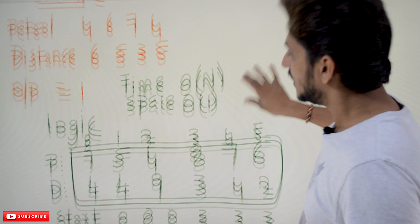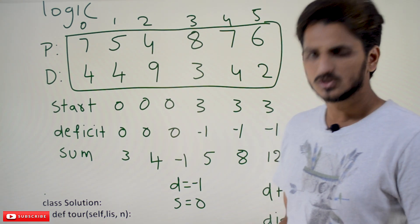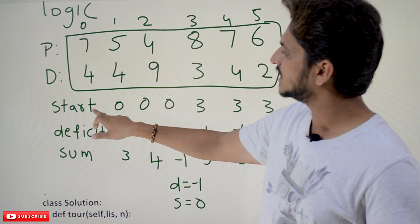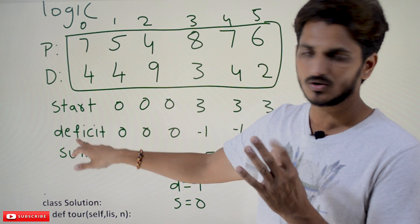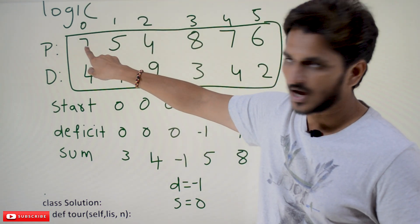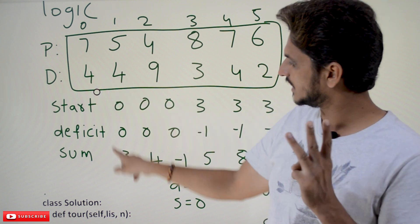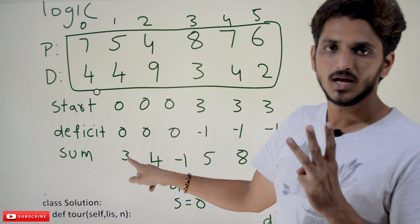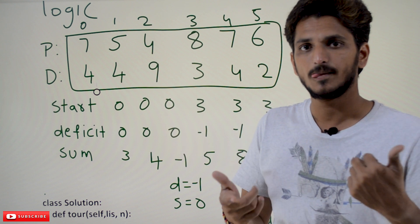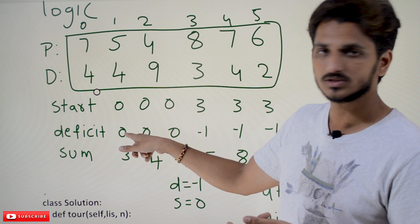In order to achieve O(N) time complexity, we maintain three variables: start, deficit, and sum. Initially, start equals 0, deficit equals 0, and sum equals 0. When we begin at the first station with 7 litres and travel 4 units, the sum becomes 3 — meaning 3 litres remaining. Deficit tracks any negative balance. Since we are still positive here, deficit remains 0.